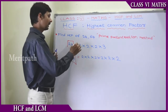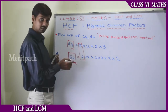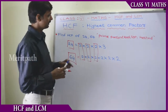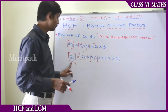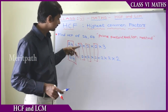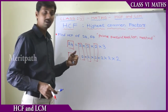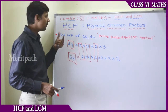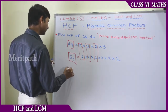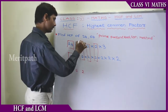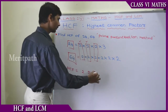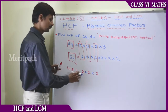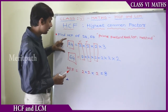Two is common for both numbers. There is one more two here, and another two. Let us see — three is present in 24 but there is no three in 64. So only this two, and two, and two — that is two occurring three times — is common for both numbers 24 and 64. So the common factors: two twos are four, four twos are eight. Eight is the highest common factor for 24 and 64.